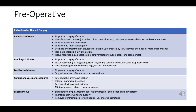Preoperative indications for thoracic surgery include pulmonary disease: diagnosis, biopsy and staging of cancer, identification of diseases like tuberculosis, mesothelioma, pulmonary interstitial fibrosis, and solitary nodules. Treatment includes lung resection, lobectomy, volume reduction surgery, and drainage and treatment of pleural effusions.